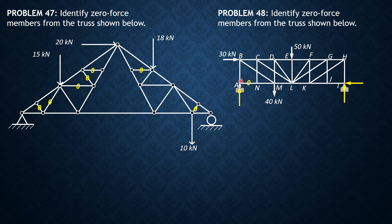Beginning with this joint here, the two are collinear — this is unique. Therefore, this carries no force when you sum forces in X. Because these two are collinear, whatever force is on one side must be equal on the other, and because one is zero, member AN is also zero.